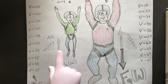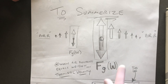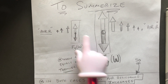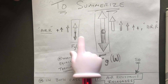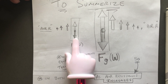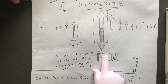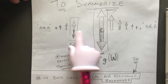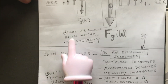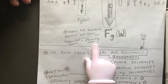To summarize — and it doesn't matter if this is a lighter object or a heavier object, like a bowling ball and a baseball dropped from a very tall building — in both cases the amount of air resistance would have to equal the weight, and when that air resistance equals the weight, they reach terminal velocity.